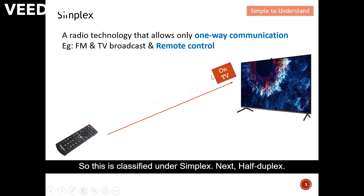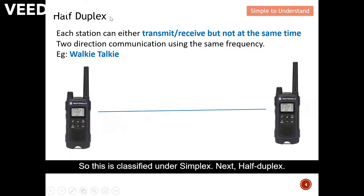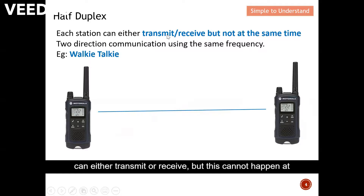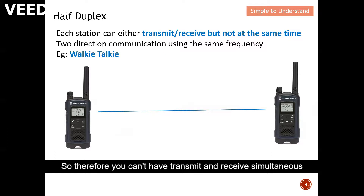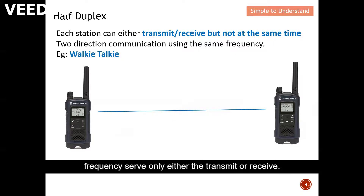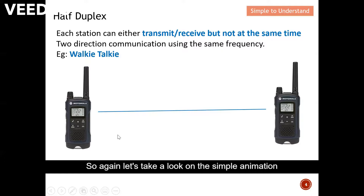Next is half duplex. For half duplex, each station can either transmit or receive, but this cannot happen at the same time. Half duplex normally uses only a single frequency, so you can't transmit and receive simultaneously because there is only one frequency — it serves either transmit or receive, but not both. One example of half duplex is the walkie-talkie.